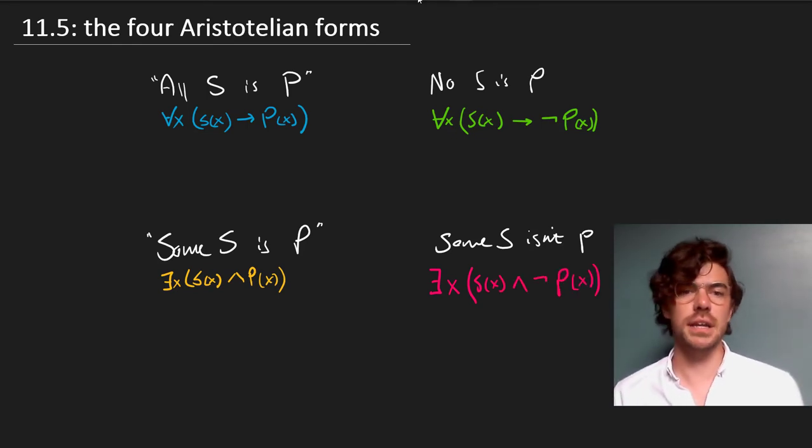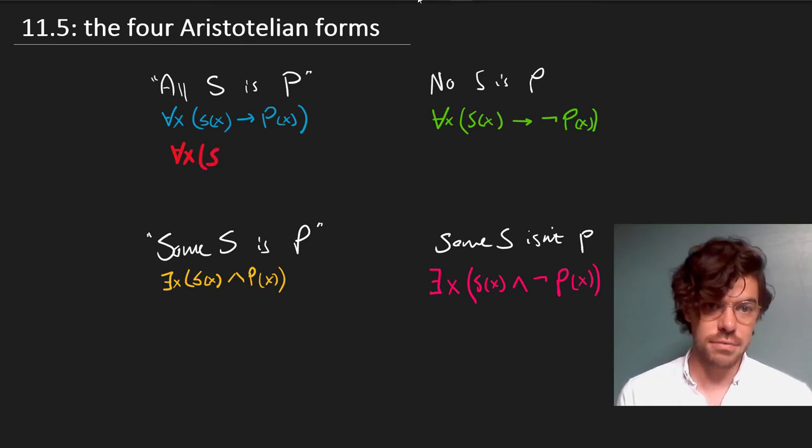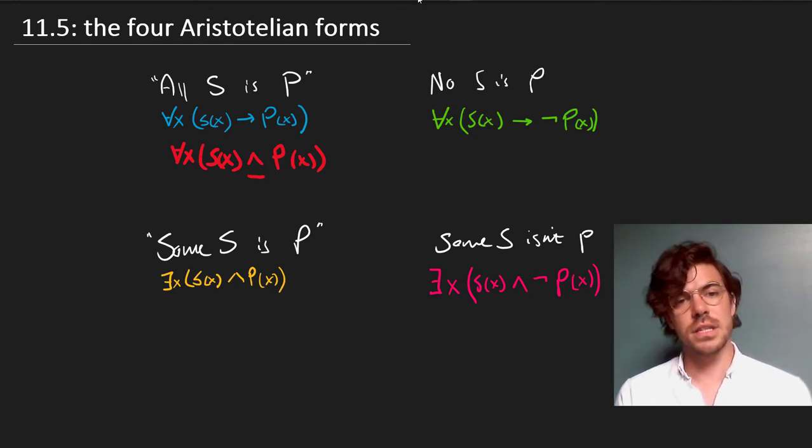Now I want to address some wrong translations that might seem appealing. At the top left we have the wrong translation: for all x, x is an S and x is a P. The temptation is to use conjunction as our main connective, but this says not that every S is a P, but that everything is both S and P.